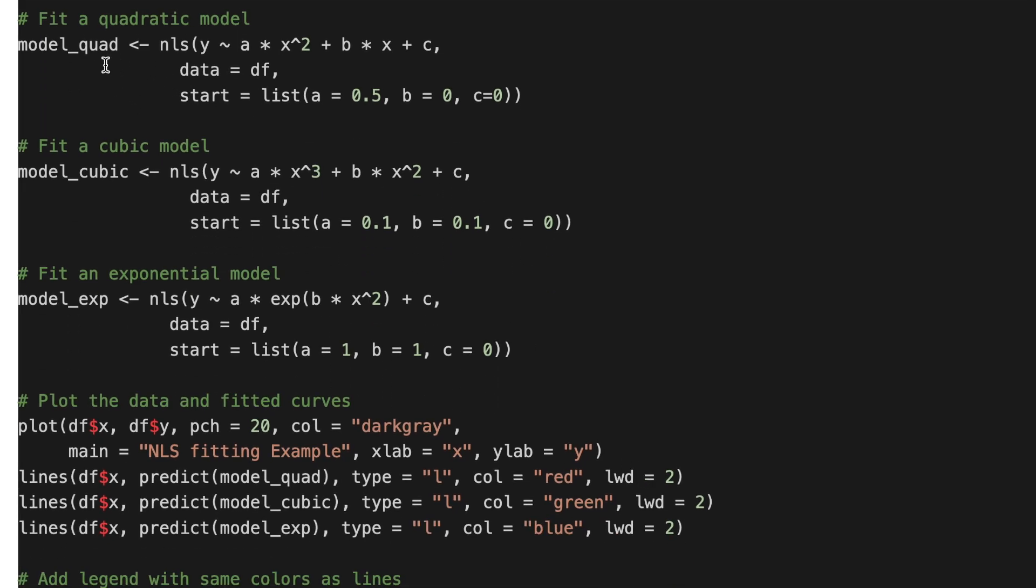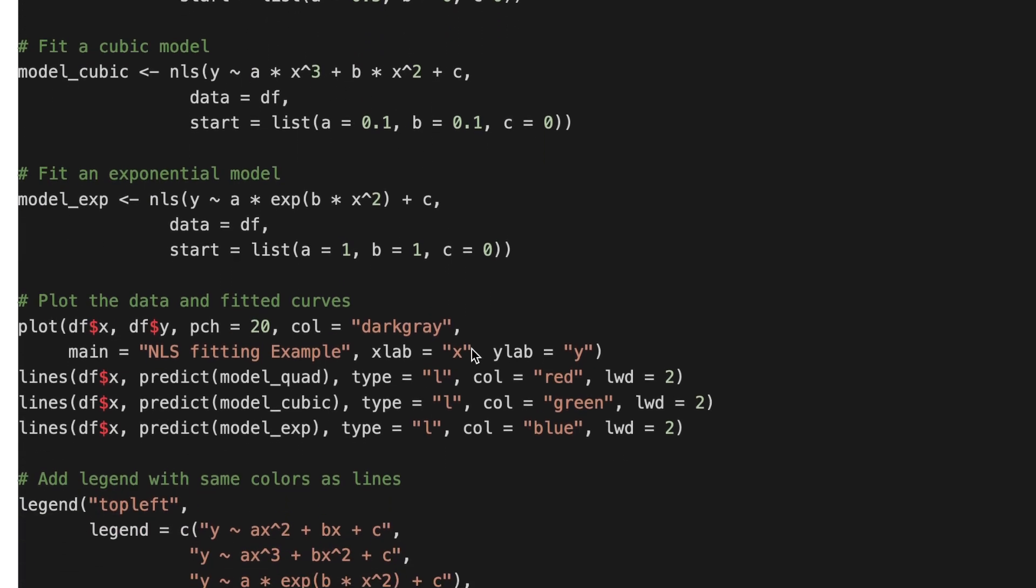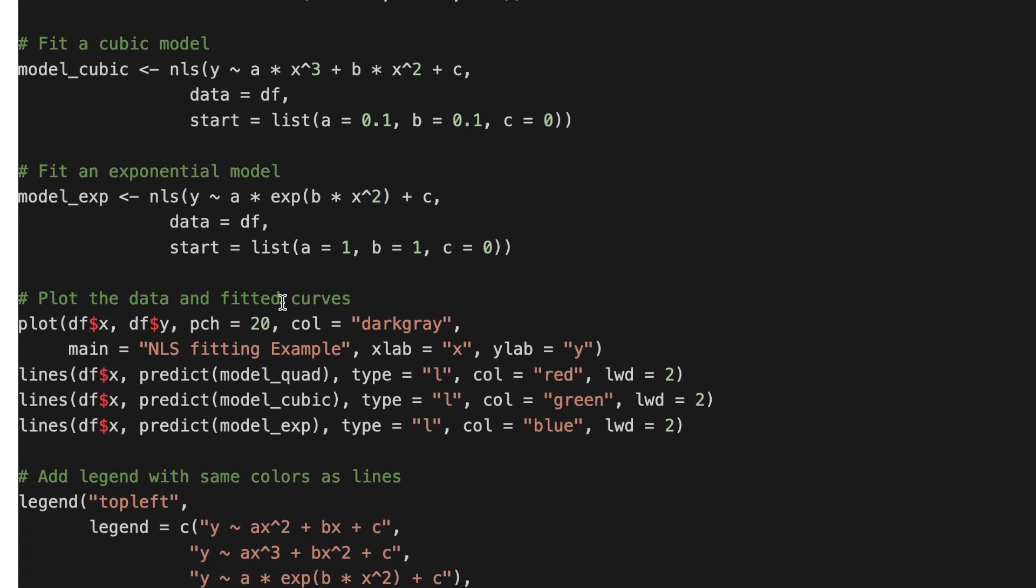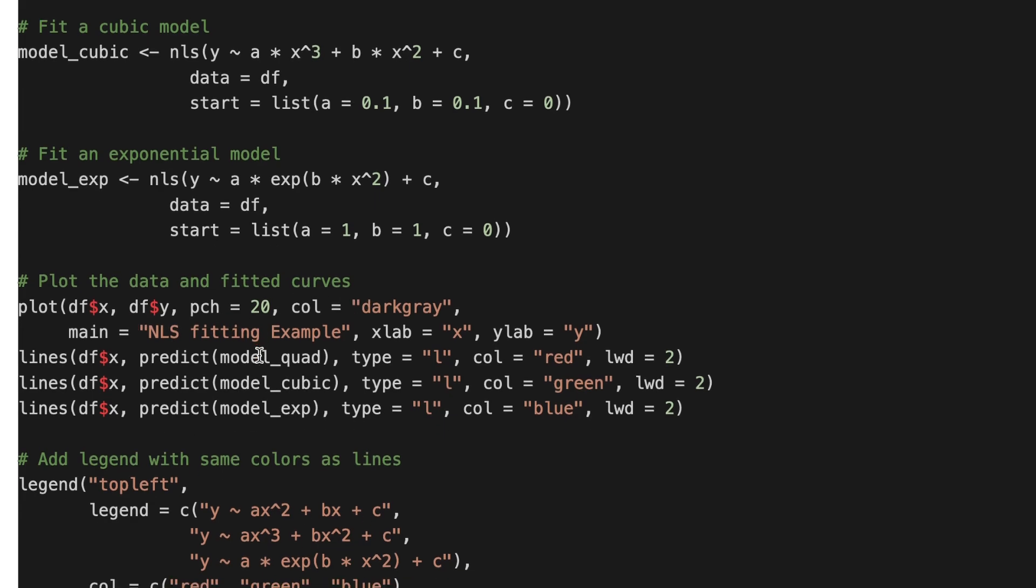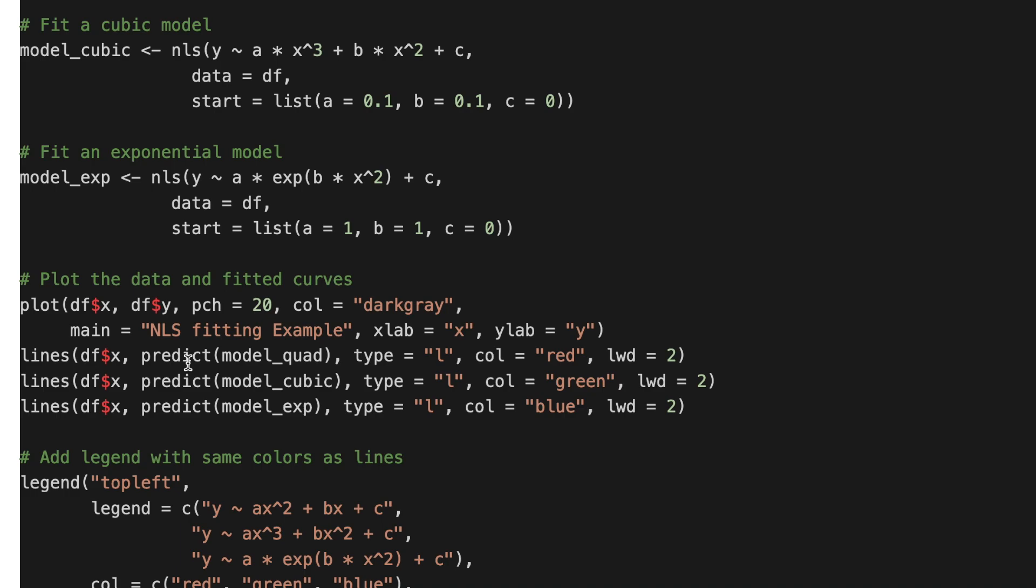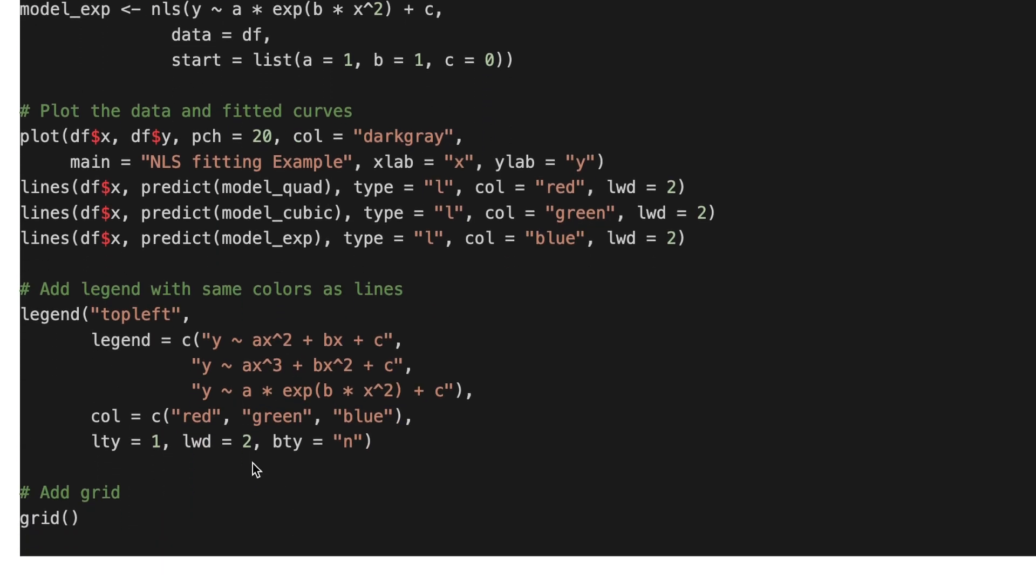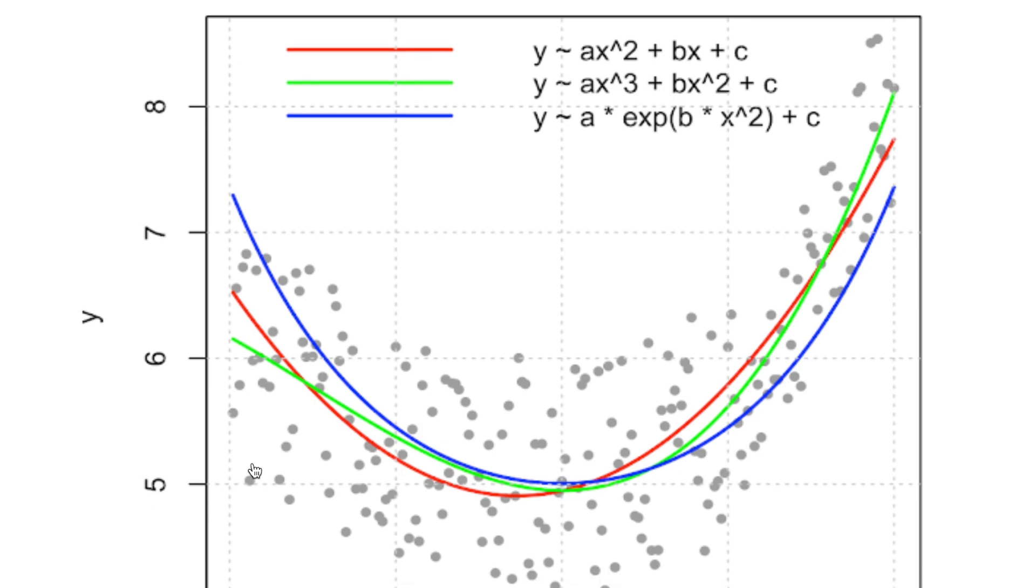Here are the models. The first one is quadratic, then cubic, and exponential. The difference is here, so we provide different fitting functions. Then we plot data and fitted curves. This one is the original data, and these are the predicted data with quadratic model, cubic, and exponential. Finally, we add some legends and the grid. Here is the result.